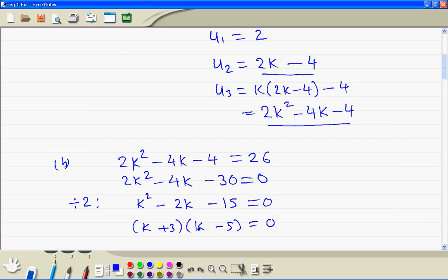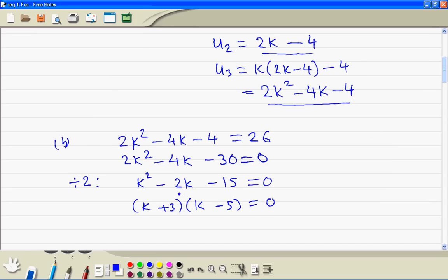So this gives us plus 3, that gives us minus 5. Then we get the minus 2. Now we solve this. So k plus 3 is equal to 0, or k minus 5 is equal to 0.